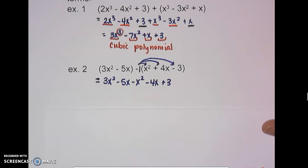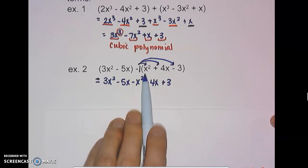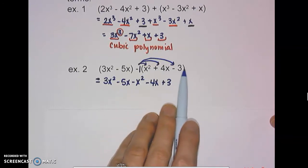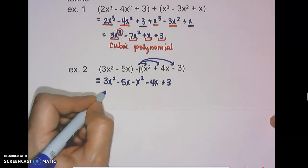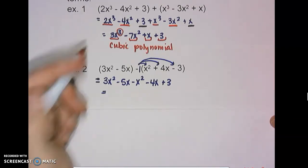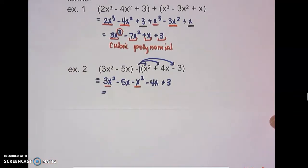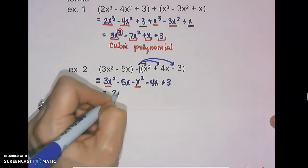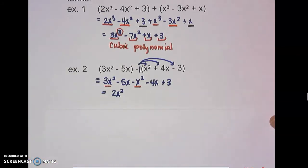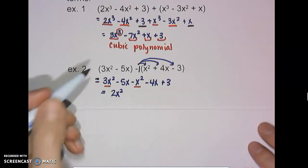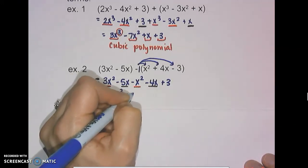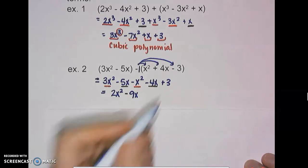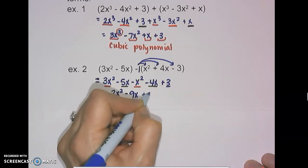So what did that subtraction sign do to the terms inside the parenthesis? It changed the signs of all of them — positive became negative, and negative became positive. That's one thing to watch out for. Now combining like terms, starting with the highest exponent: 3x squared minus x squared gives us 2x squared. Next, negative 5x minus 4x is negative 9x. Then plus 3, which has nobody to combine with.